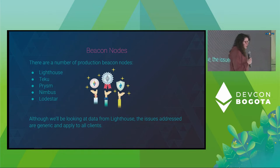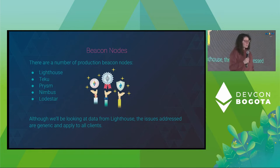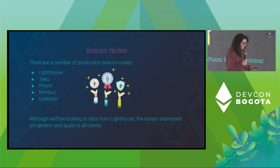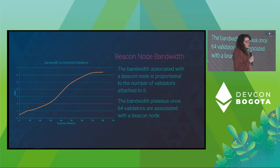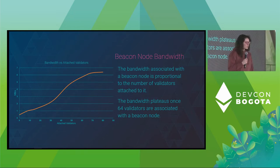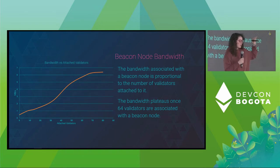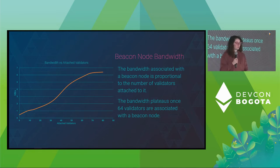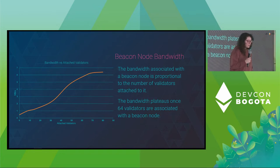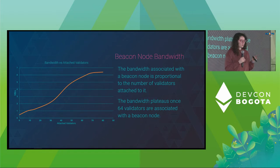There are many others: Teku, Prism, Nimbus, Lowstar — we are the second most popular one. While the data we're going to be looking at is Lighthouse, we are certain that this applies to any other client across the network. The first thing to notice is that bandwidth associated to a beacon node is proportional to the number of validators it has attached. You can see that it increases when the number of validators goes up, but at 64 validators it stays more or less the same. 64 is going to be a really important number in this talk.